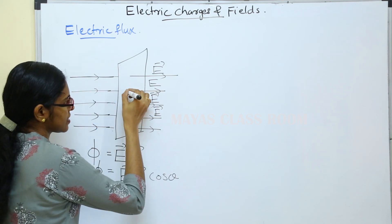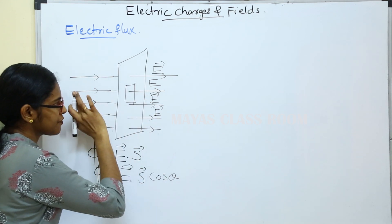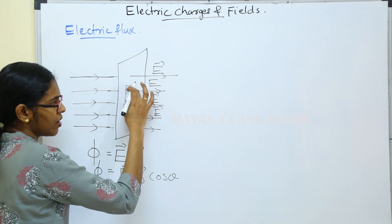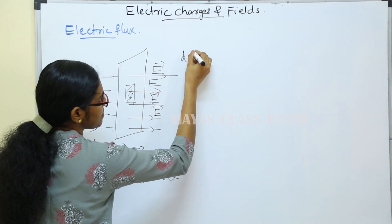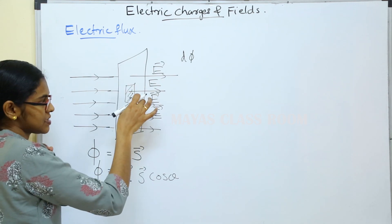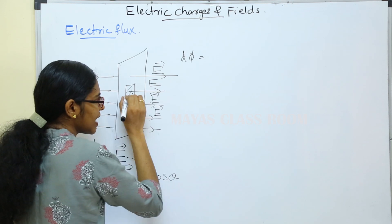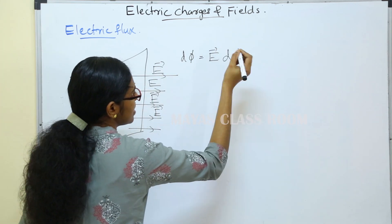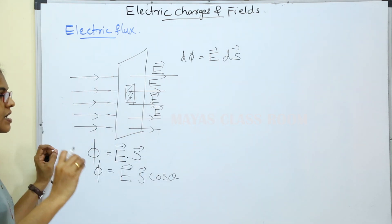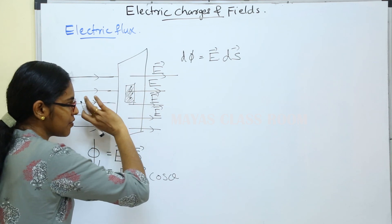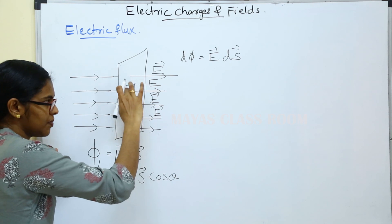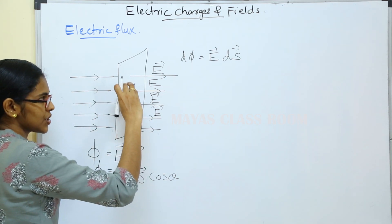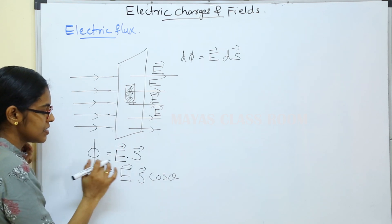Now, if we have a small surface, we represent dφ. dφ is equal to the electric field E dot dS. For a small surface element, dφ = E · dS. When we consider the total full surface, φ = E · S.